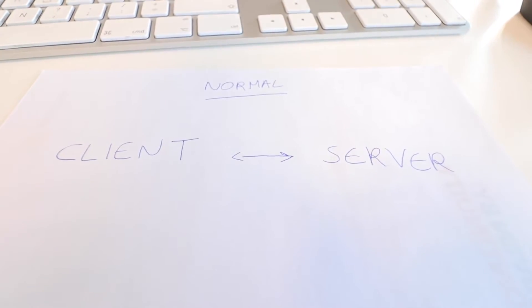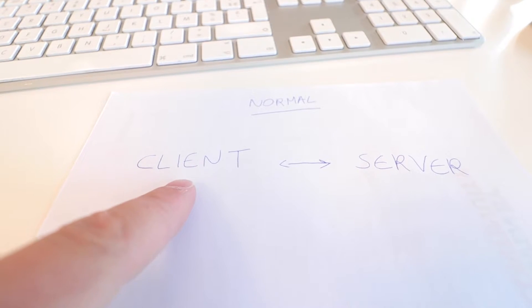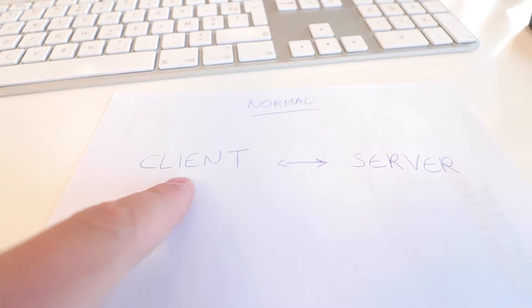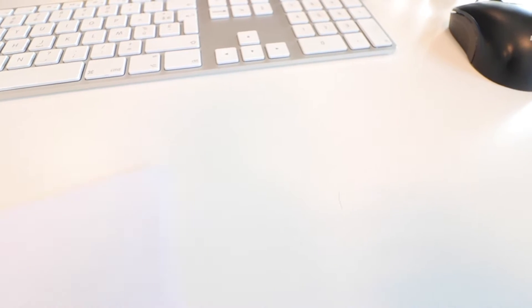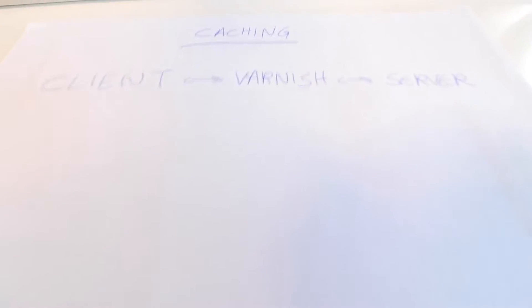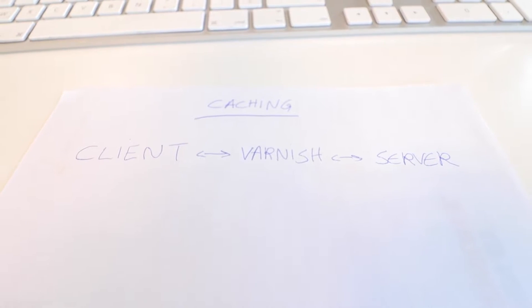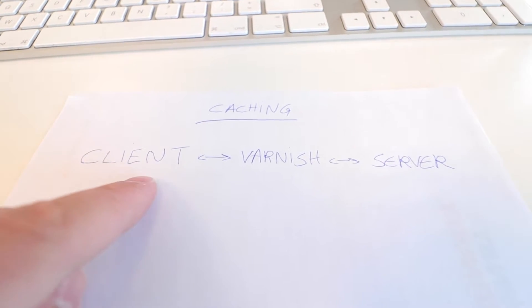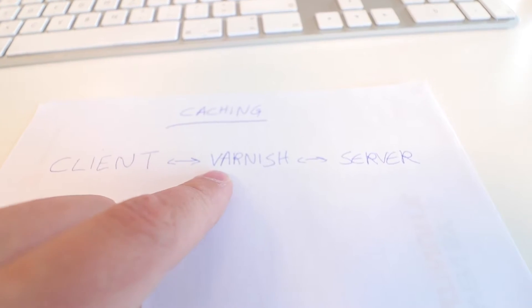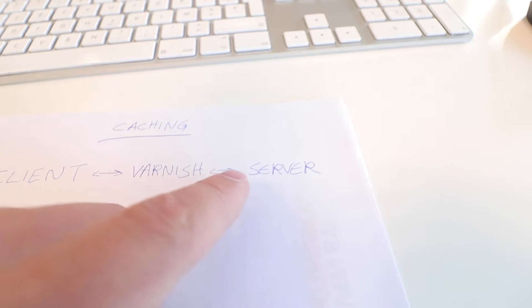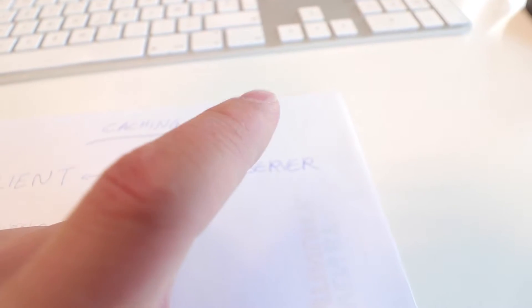Let's explain by visualizing it. When you're not using Varnish, your browser — your client — is connecting directly to the web server. But when you do add the layer of caching, Varnish is added to the mix. That means your browser communicates with Varnish, which caches the pages, and when something is not in cache, it forwards it to the server.